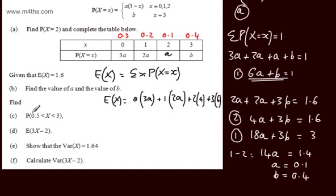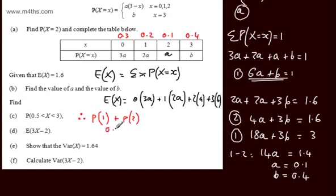We now need to find the probability that x is between 0.5 and 3 with strict inequalities. Since x is discrete, the values satisfying 0.5 < x < 3 are x = 1 and x = 2. So this is P(1) + P(2) = 0.2 + 0.1 = 0.3.